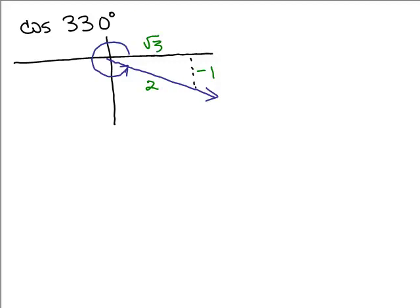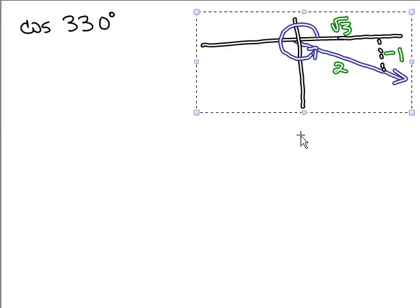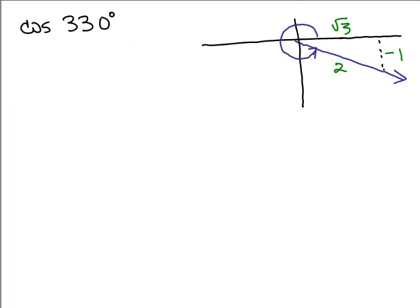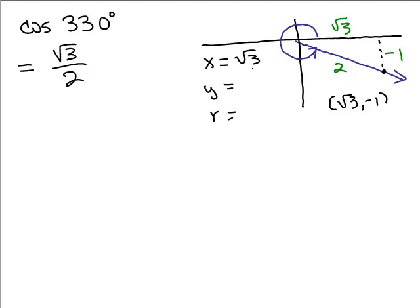So to get the cosine, the cosine equals, it's going to be the X over the R. So it's square root of 3 over 2. Now, if you want to write that as an ordered pair, you could write that as square root of 3, negative 1. If you wanted to write out the X, Y, and R values, you could have written out square root of 3, negative 1, and 2. All right, let's do the next one.